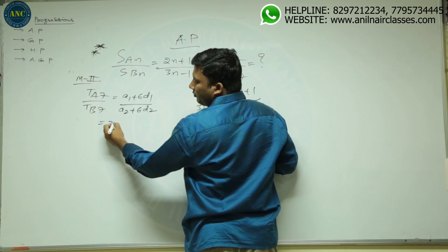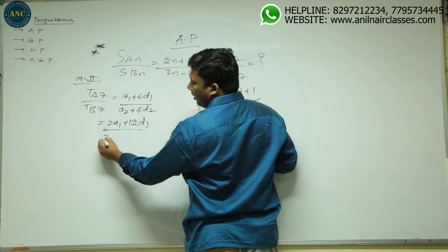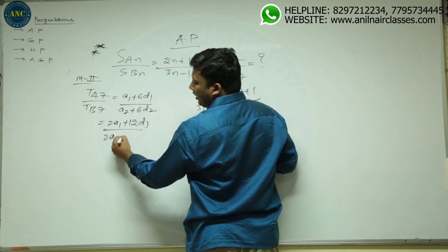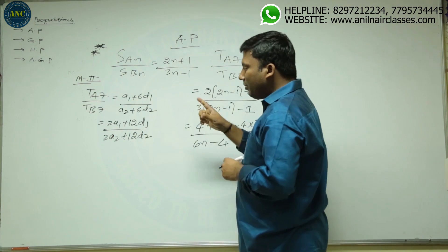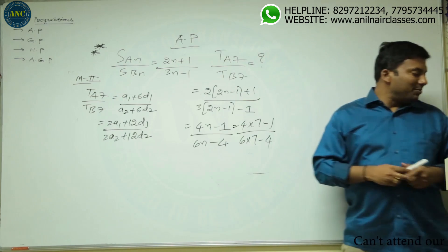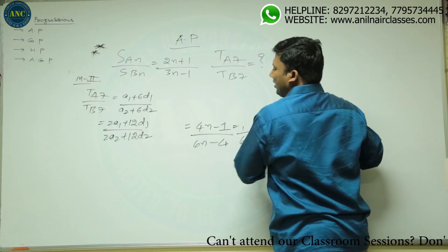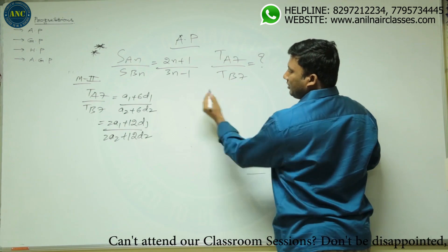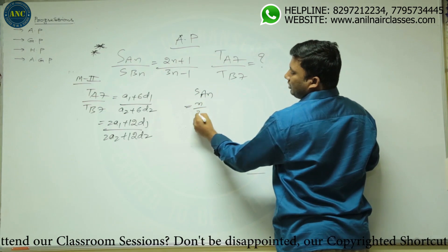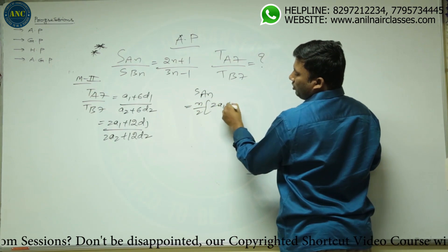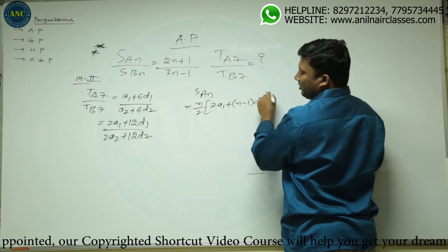I will multiply by 2: 2A1 plus 2D1, divided by 2A2 plus 2D2. Why am I multiplying by 2? It is based on the definition of sum of n terms. The sum of n terms is given by n/2 into (2A1 plus n minus 1 into D1).